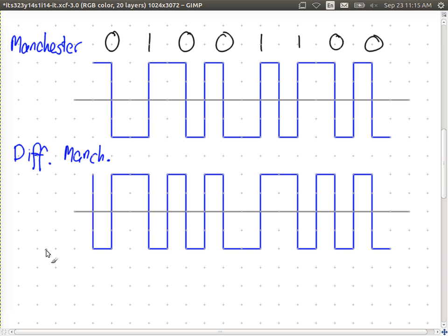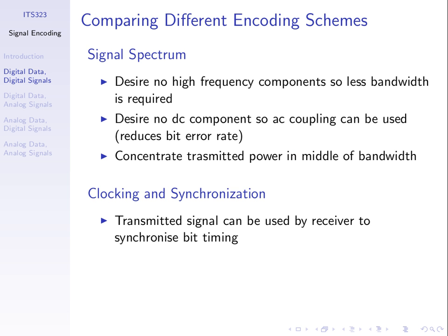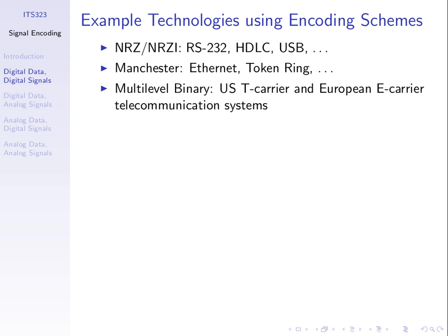Different schemes are used in different technologies. Non-Return to Zero is used in USB and RS-232 serial cables. NRZ inverted on ones is also used in serial interfaces. Manchester encoding is used in wired LANs — specifically Ethernet. Some of the other schemes not covered in detail, like B8ZS, are based on bipolar AMI and are used in some wide area network technologies.